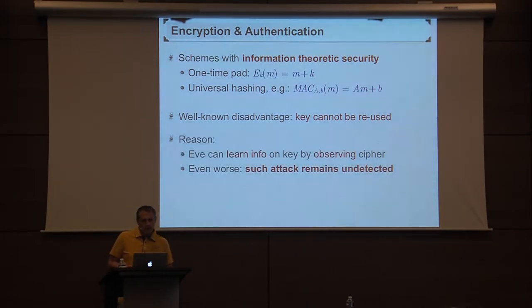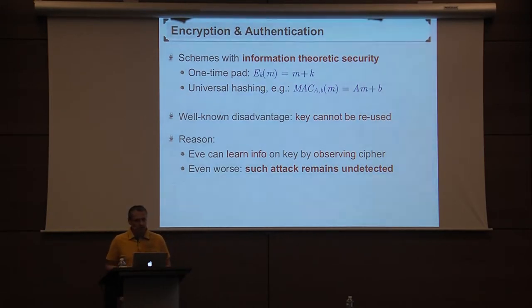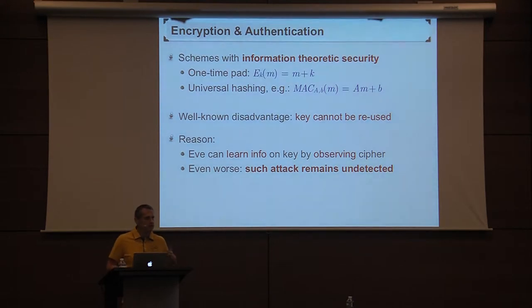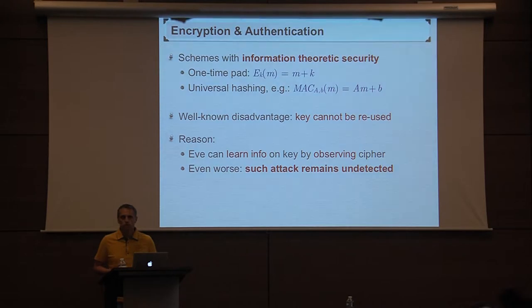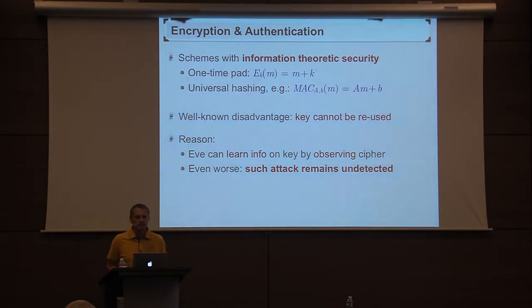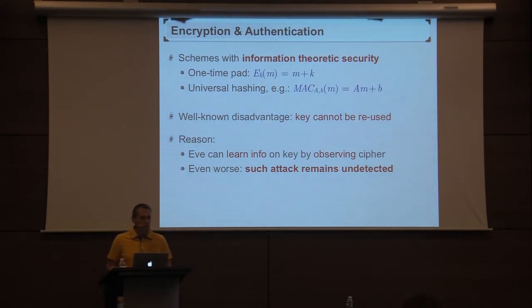The reason is quite obvious, at least intuitively: an attacker Eve can learn information on the key just by observing the ciphertext or the authentication tag. So if you reuse the key, just by observing the communication, Eve will learn more and more information on the key and will eventually know the key. And what's even worse, such a passive eavesdropping attack remains undetected — there's no way to detect whether eavesdropping took place or not.